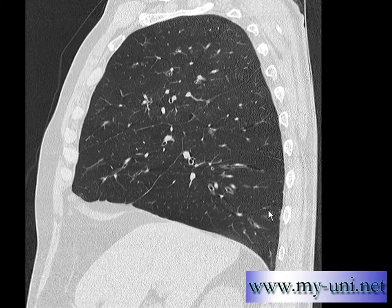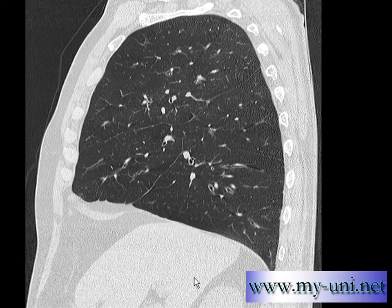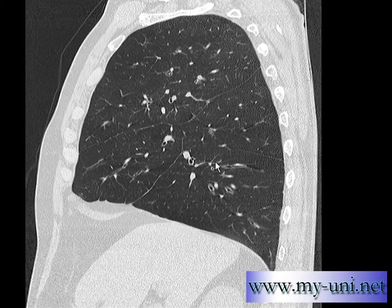This is a set of sagittal images, as we call them. These images are acquired as volume data, and with the help of the computer that comes with your CT scan machine, you can reconstruct this data as axial, coronal, or sagittal sets of images. They are also known as MPR — multi-planar reconstructions.